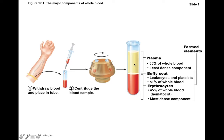The formed elements at the bottom are what we call hematocrit. The anatomical definition of hematocrit would be all of your formed elements, while the clinical definition is basically just your red blood cells. They're essentially the same thing because the buffy coat accounts for less than 1% of your total blood volume. When you spin blood down, the buffy coat looks like a dusting of white cells right on the surface of those red blood cells — there's really not that many there.